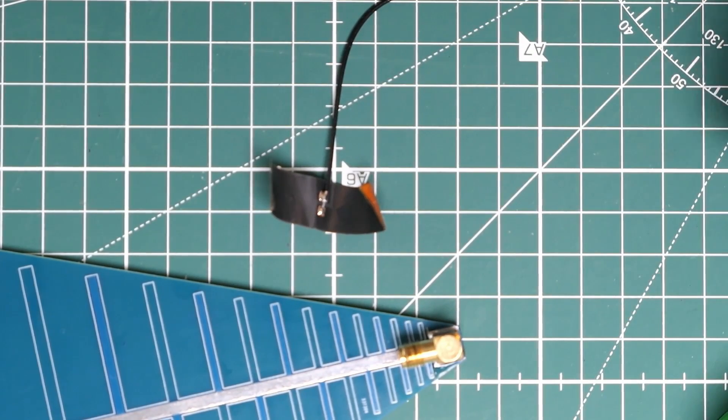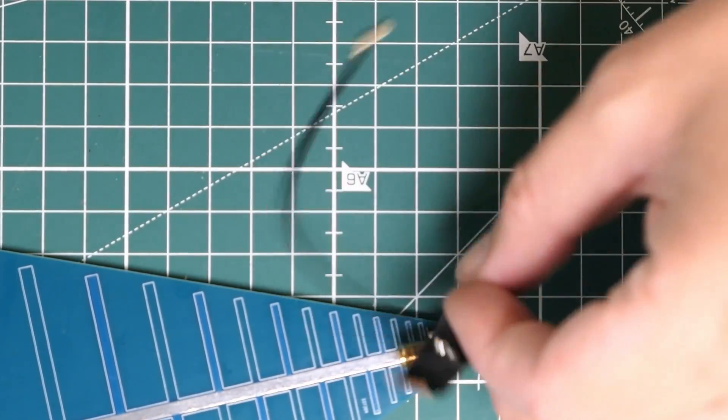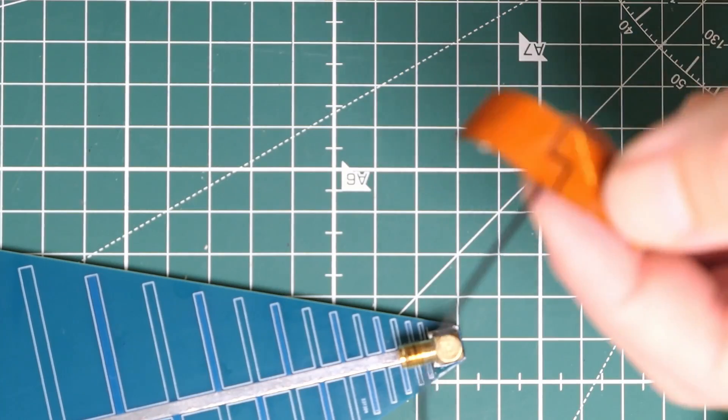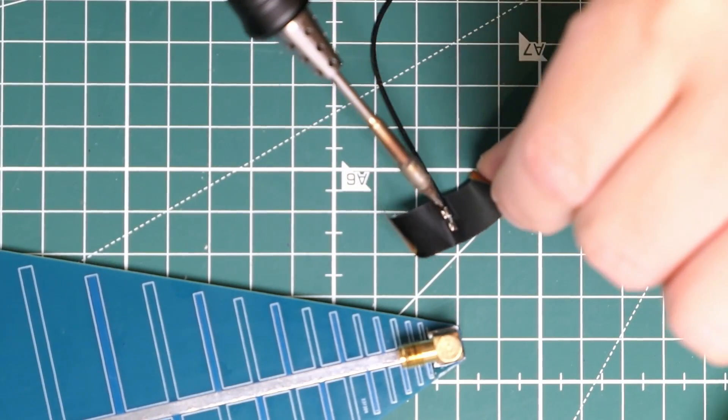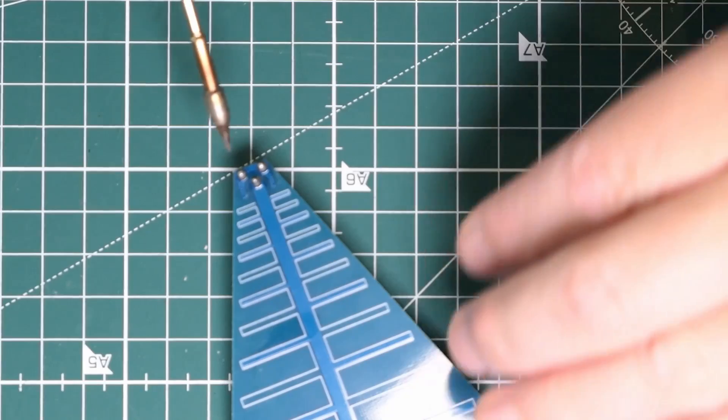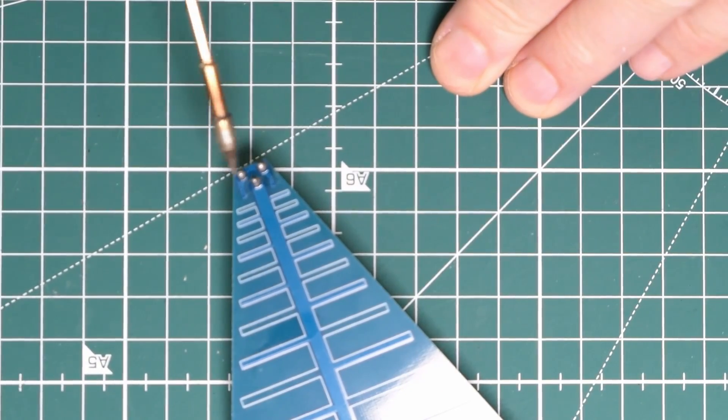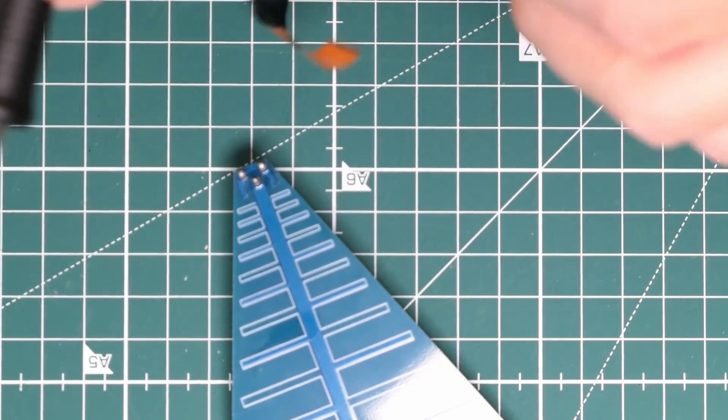I'm going to take this antenna I got with one of these clone ESP32 minis, and I'm going to basically unsolder this end, and I'm going to solder it onto basically the bottom of this SMA socket here. Give me a few seconds and we can get that done.